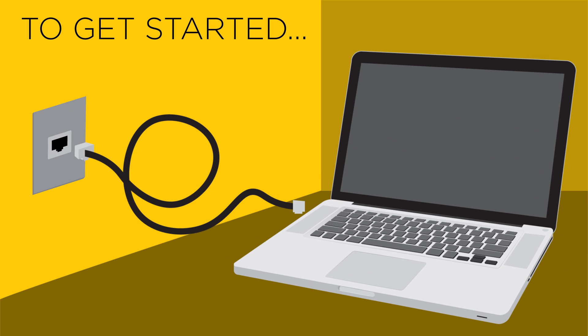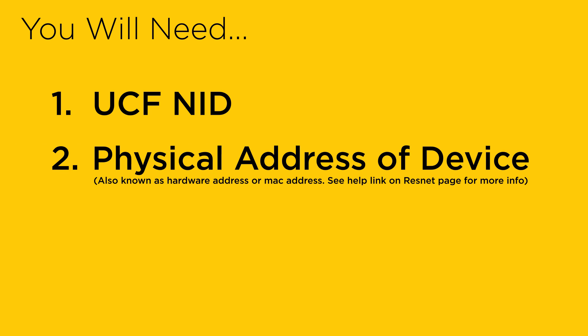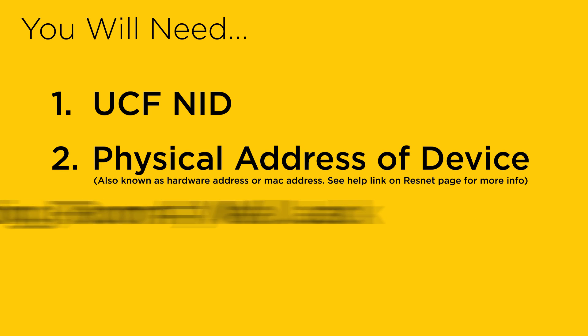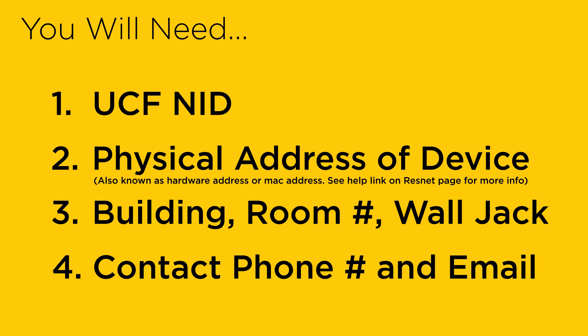To get started, you have to get registered on the ResNet. Once your computer is set up, plug it into the Ethernet port you plan to use in your bedroom. Start your computer's browser and go directly to www.resnet.ucf.edu. You will need your UCF NID, the physical address for the device you want to register, your building room number and wall jack, and the phone number and email address at which you prefer to be contacted.